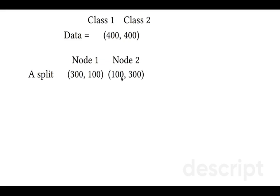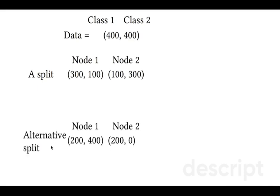There is also an alternative split. It can split the data such that in node 1 there will be 200 observations of class 1 and 400 observations of class 2. And in node 2 there will be 200 observations of class 1 and none of class 2.